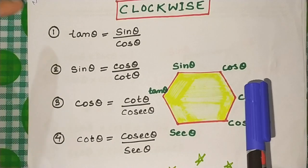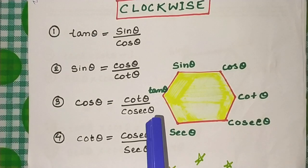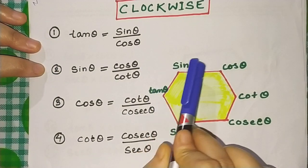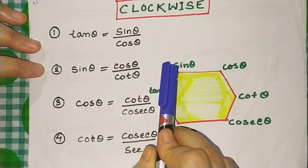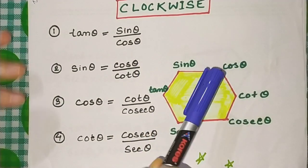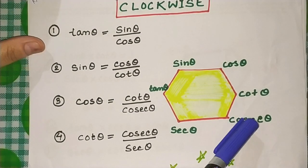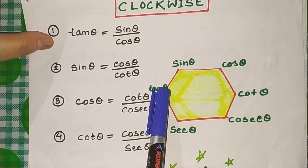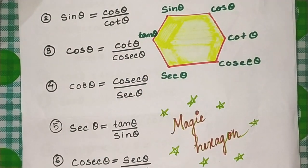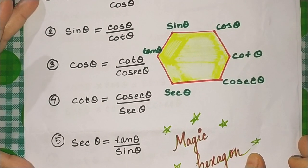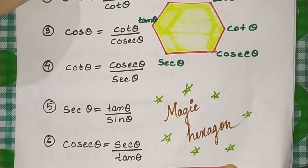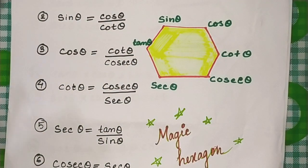We will go in the clockwise direction and we will get a set of six formulae. The first one: tan θ = sin θ / cos θ. Going clockwise, sin θ = cosec θ / cot θ. Then cos θ = cosec θ / sec θ. After that, cot θ = cos θ / sin θ. In this way we get six formulae going clockwise.